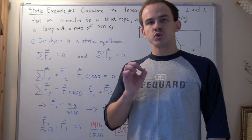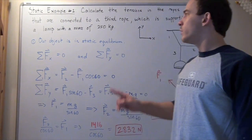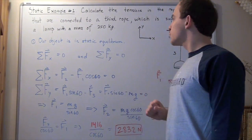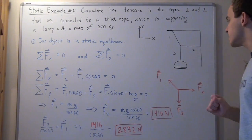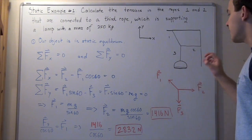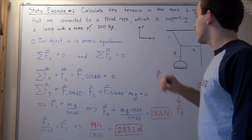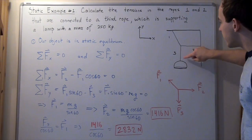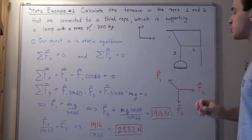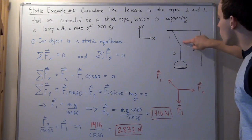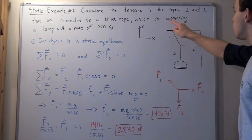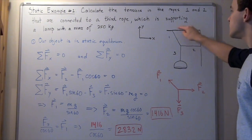In this lecture, we're going to look at the following example that deals with static equilibrium. Our system consists of a lamp that has a mass of 250 kilograms that is hung by rope number three. Rope number three is itself attached to two more ropes, rope number one and rope number two, which are both attached to the walls of a ceiling.